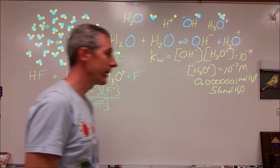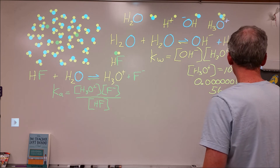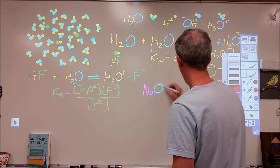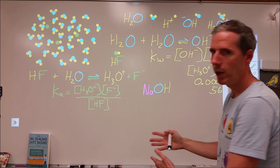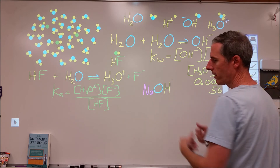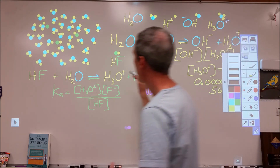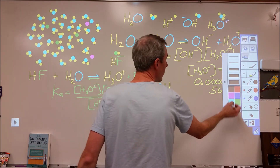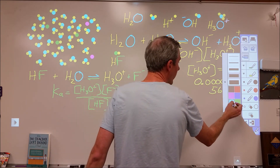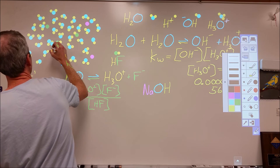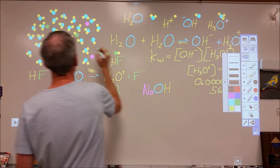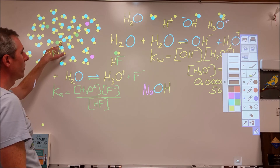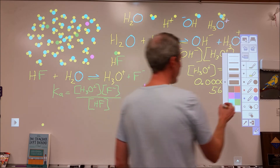There's another thing we can do: add NaOH to the solution. When NaOH is added to water, the sodium ion breaks free from the hydroxide — it dissolves and dissociates. So now we have sodium ions in solution, and we're also adding hydroxide ions. That hydroxide is then going to react differently with the hydrofluoric acid already present in solution.